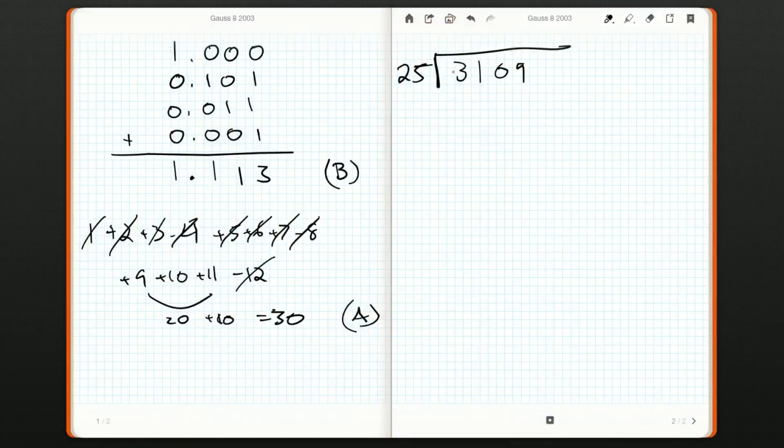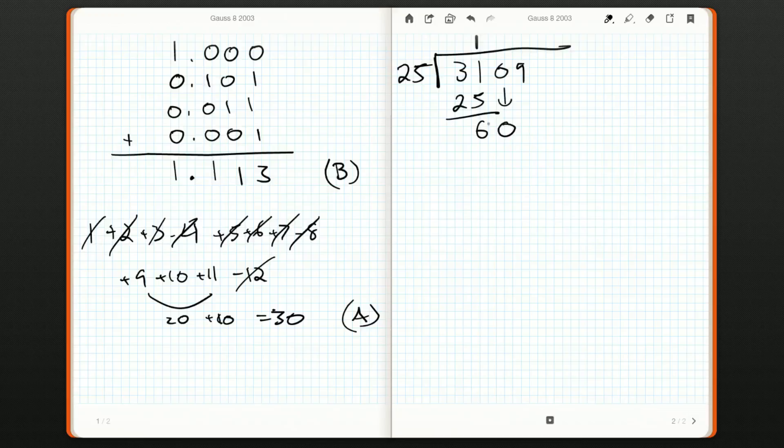So 25 doesn't go into three any times. But 25 goes into 31 once. So 1 times 25, we have 25 here. 31 minus 25 is 6. And we bring down the zero. Now 25 goes into 60 twice. So you can have 50. So 50 here. Now we bring down the 10.